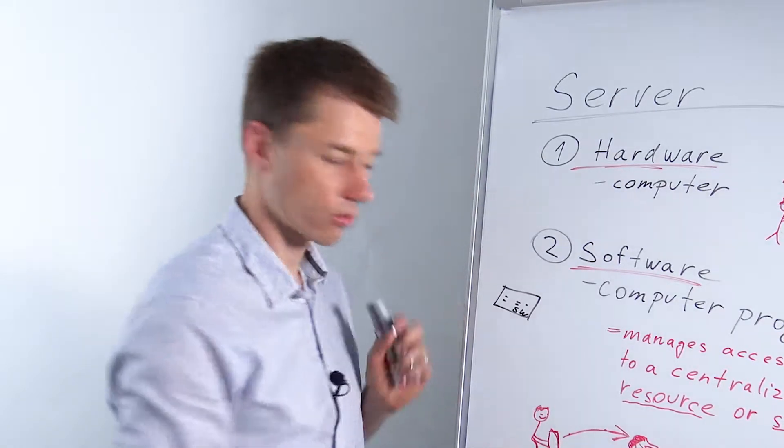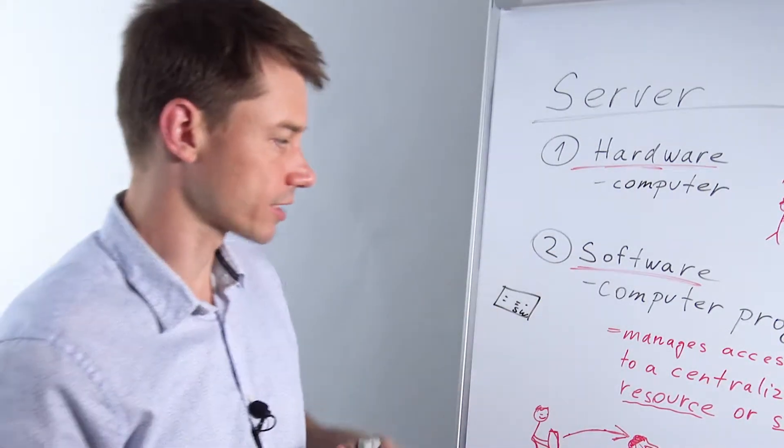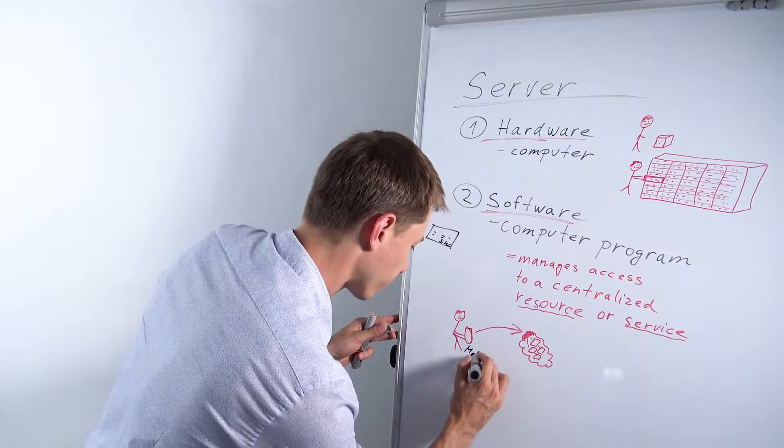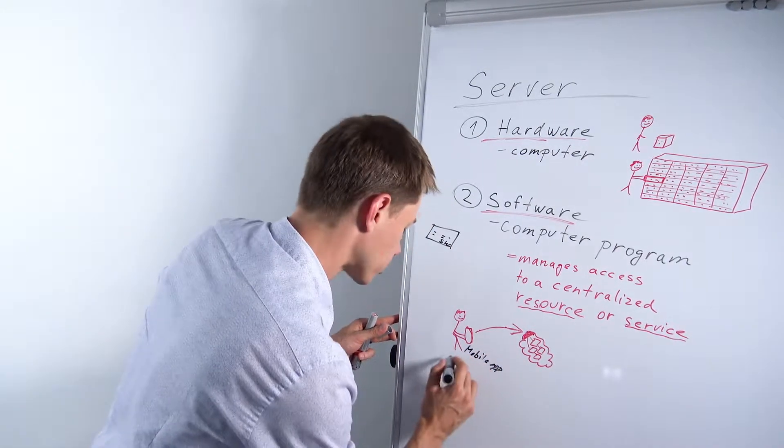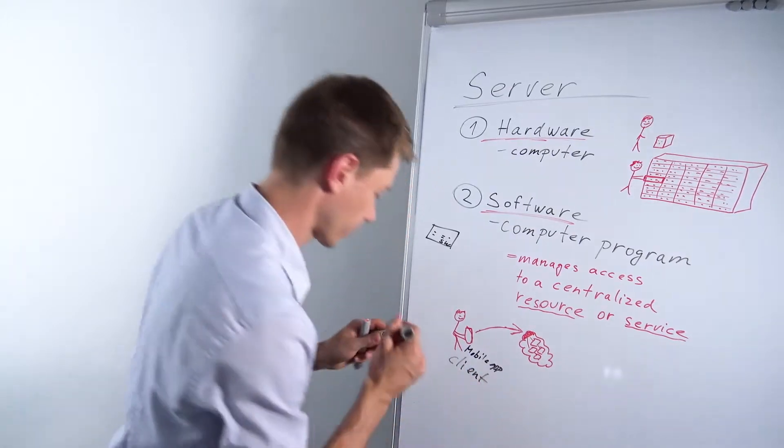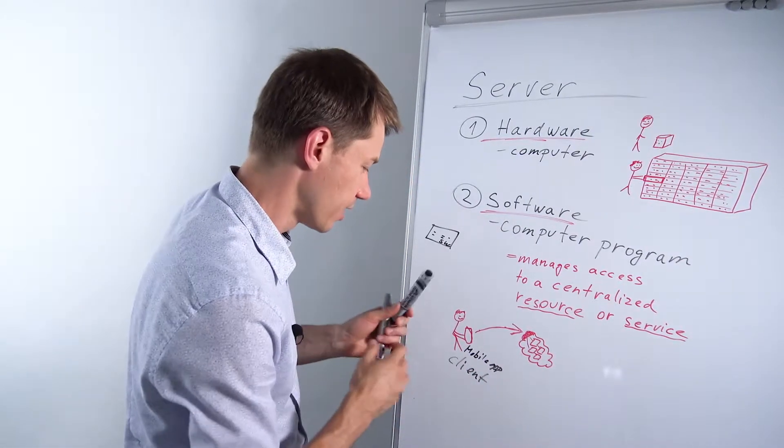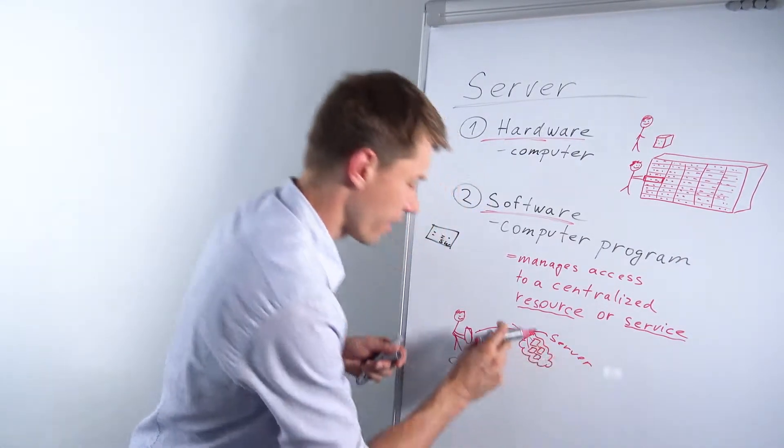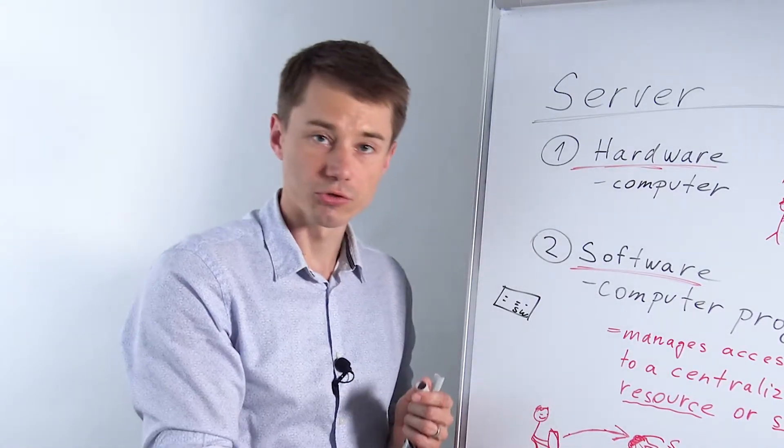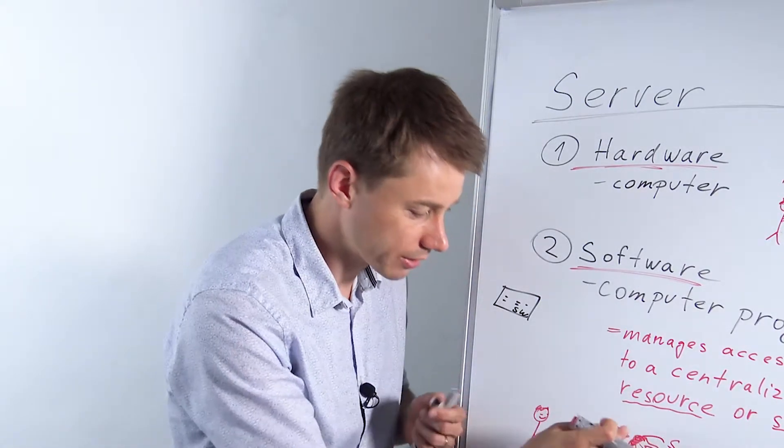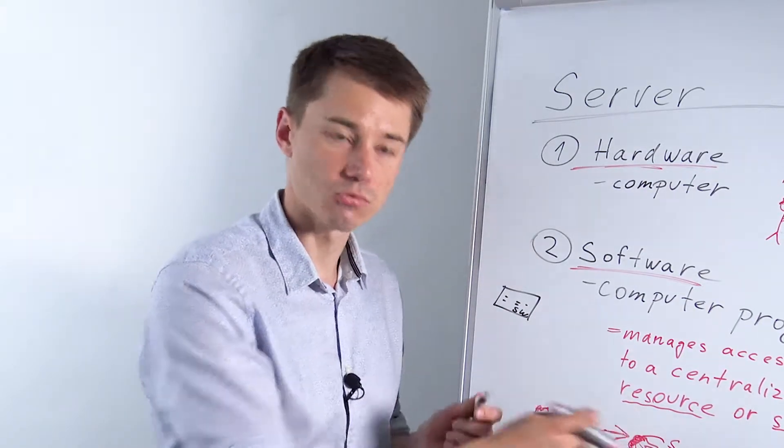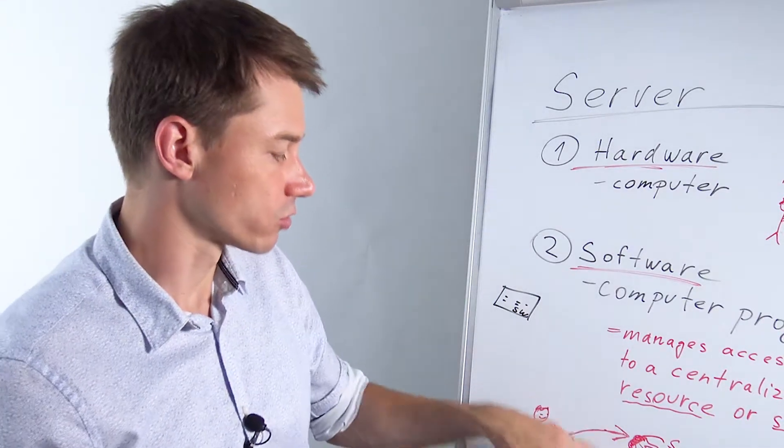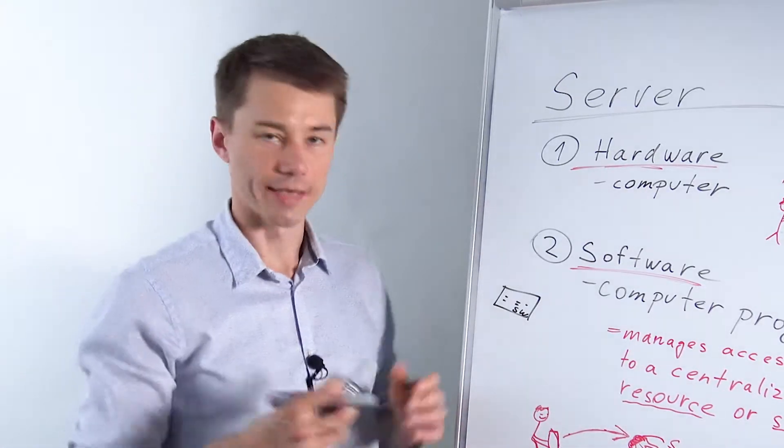That's why I'm saying a software is a computer program that actually manages access to a centralized resource or a service. So that's a server. This user with a mobile app is actually a client, and this is a server here. The server manages access, so not every user can access all the data. Someone or something needs to manage the access and that's the job of a server. A server manages access to a centralized resource or service. It serves the resources or services.